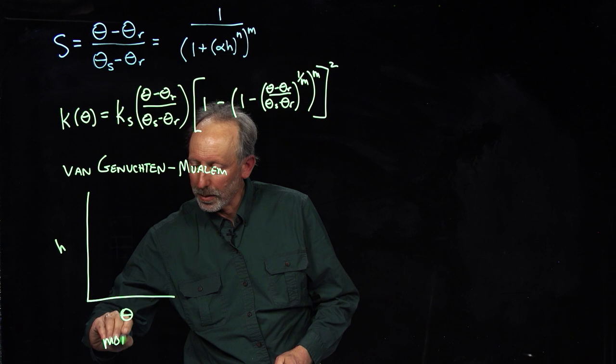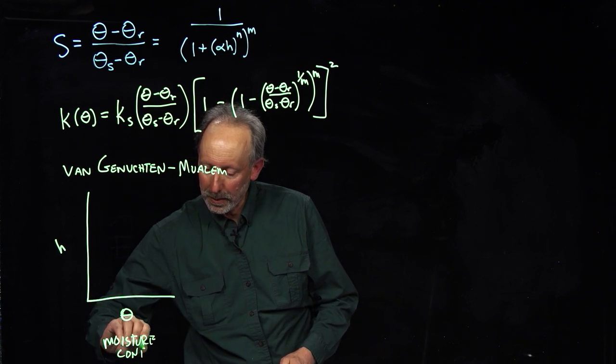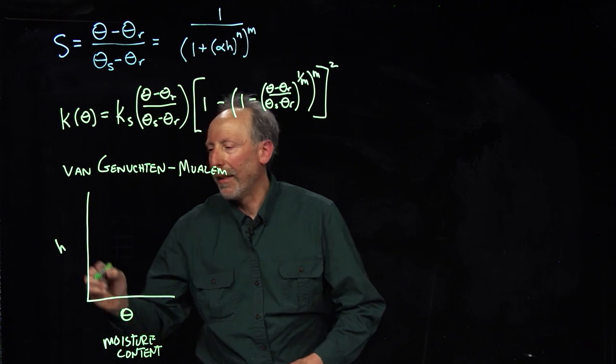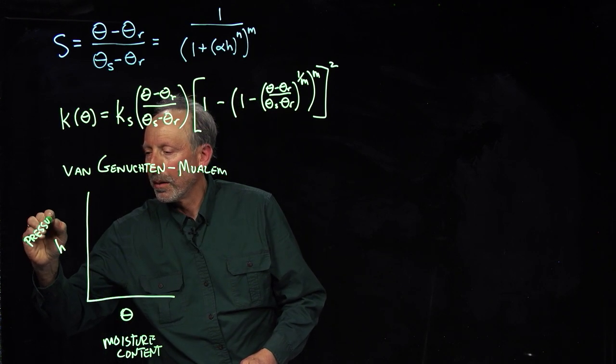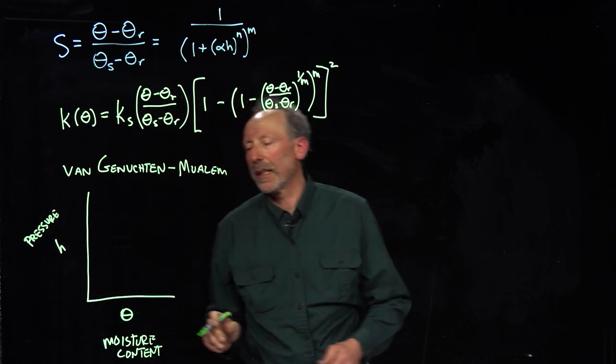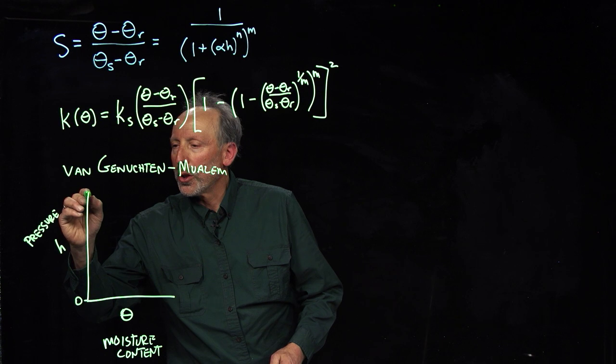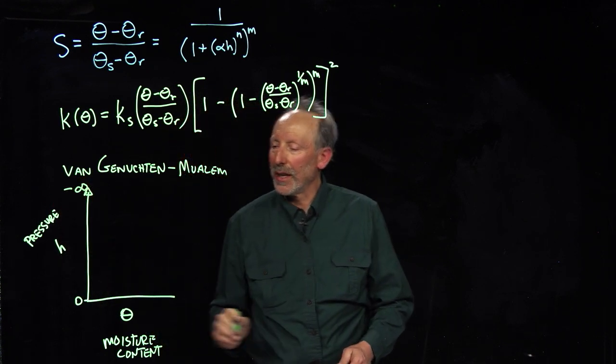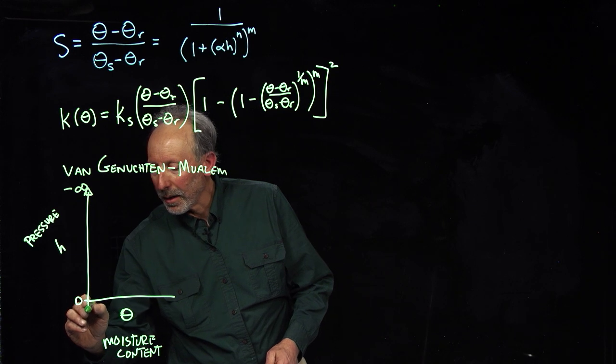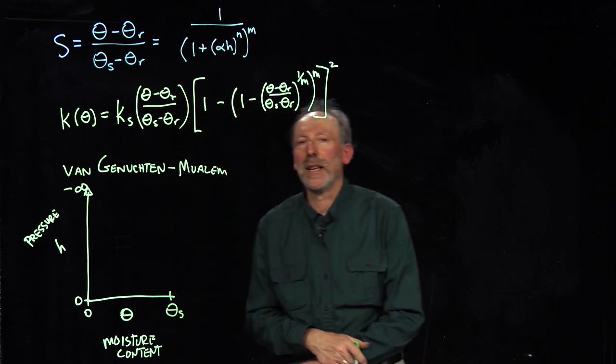So it's moisture content. And then we have pressure on the vertical axis. And we remember that we're measuring from zero pressure towards negative infinity, so very large negative pressures. And then we have here zero water content, and our limit here is going to be the saturated water content.